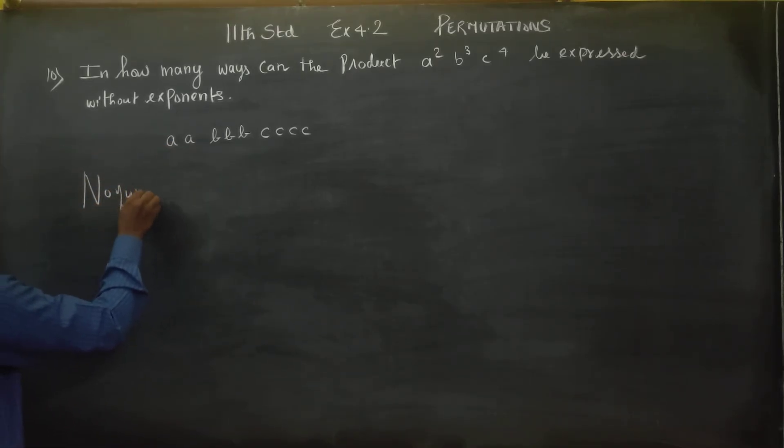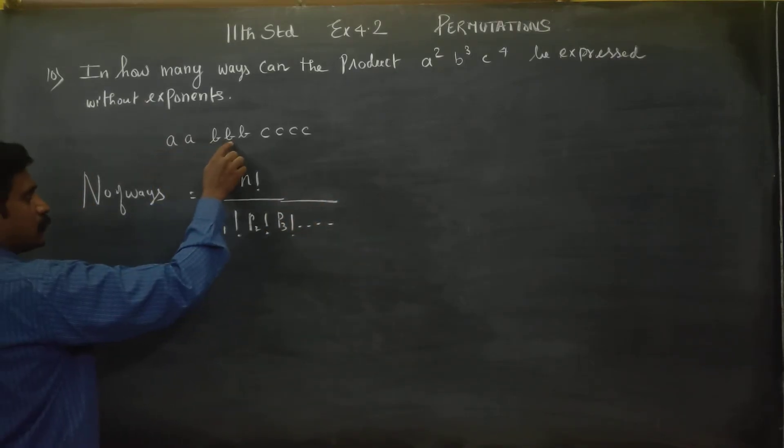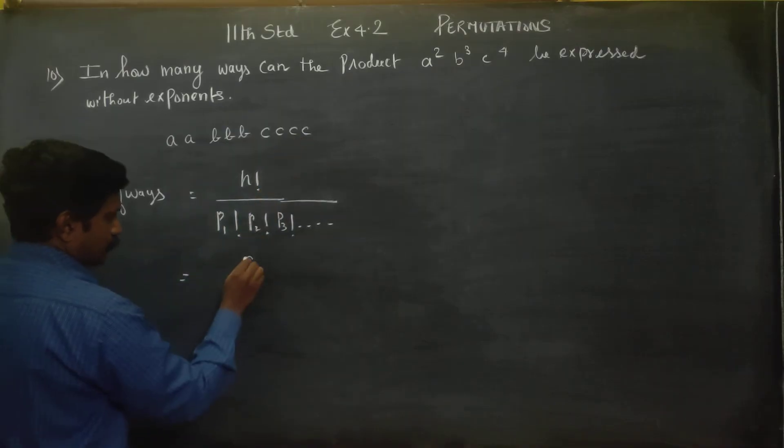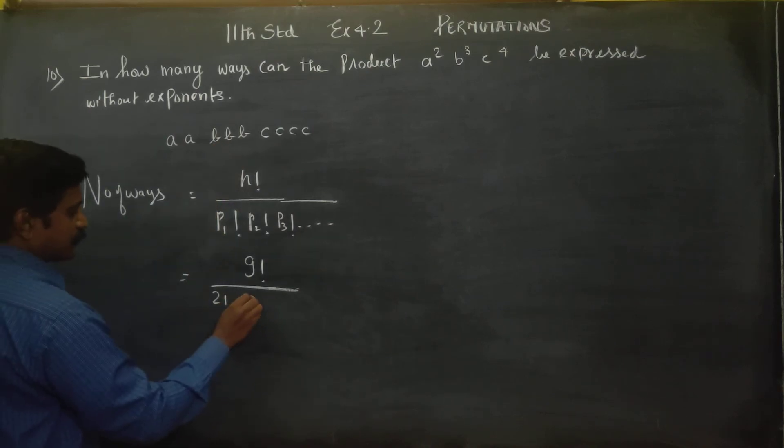It is equal to n factorial divided by repetitions factorial. What is n? 1, 2, 3, 4, 5, 6, 7, 8, 9. So it's 9 factorial. a repeats 2 times therefore 2 factorial, b repeats 3 times therefore 3 factorial, c repeats 4 times therefore 4 factorial.